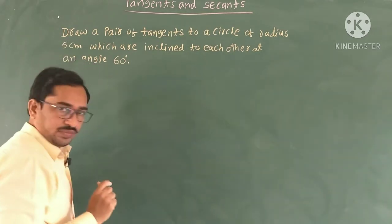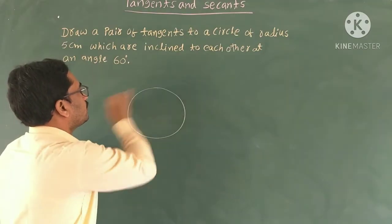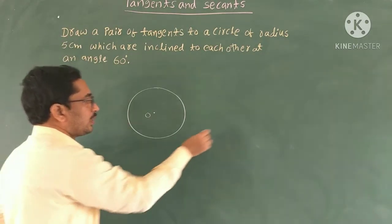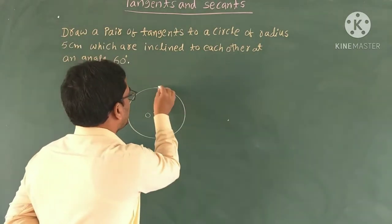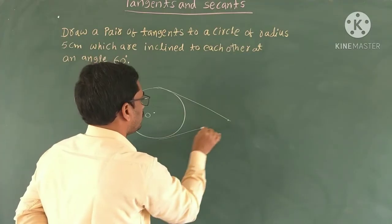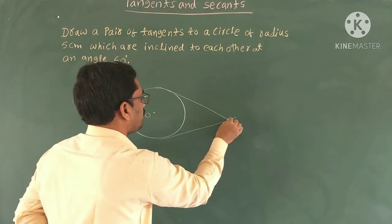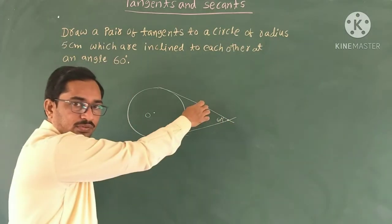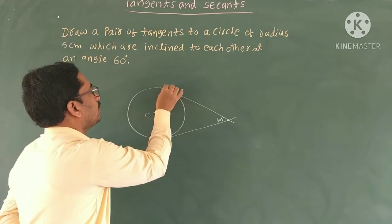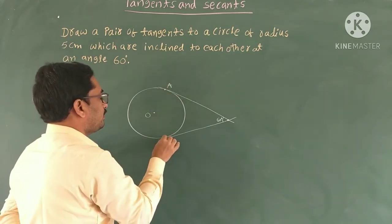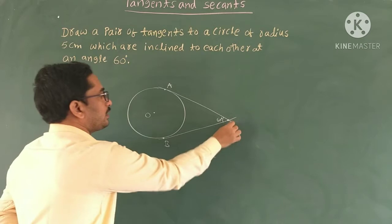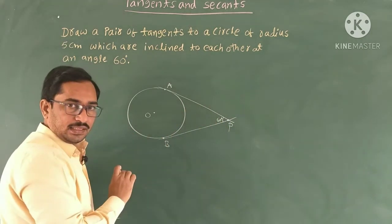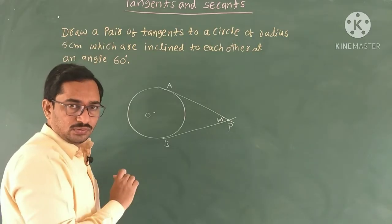See the rough diagram. For a given circle of radius 5 centimeters, this is the center. We have to draw two tangents from an external point. From the external point you can draw two tangents, and the angle between the two tangents must be 60 degrees. Look at the points of contact A and B. Here the external point is P. PA and PB are the tangents and the angle between the tangents is 60 degrees.